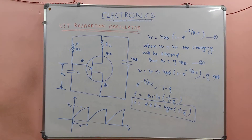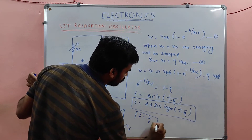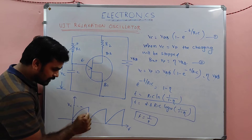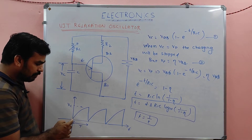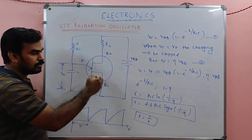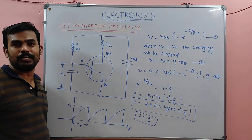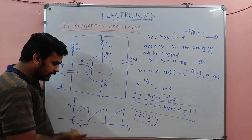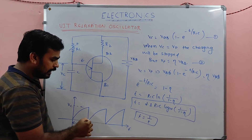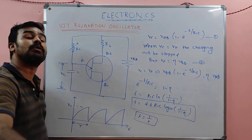Frequency is simply 1/T. The output waveform is a sawtooth wave. Whenever the capacitor voltage increases up to VP, there is conduction between the emitter and B1, so resistance suddenly drops to zero. When resistance drops to zero, the voltage across the capacitor suddenly drops to zero, and charging begins again. This cycle — charge up to VP, then drop to zero — repeats continuously.